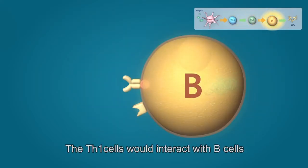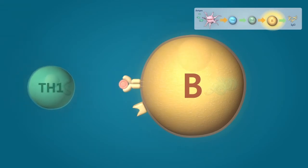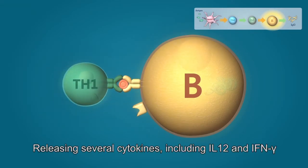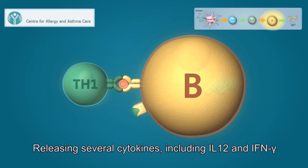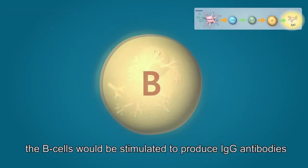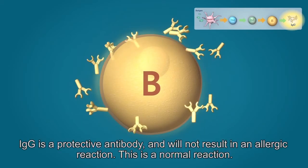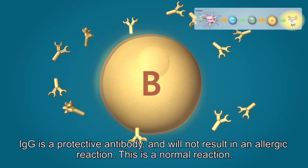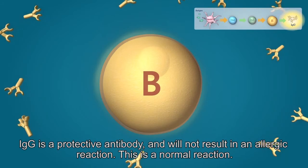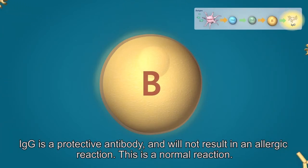The Th1 cells would interact with B cells, releasing several cytokines, including interleukin-12 and interferon gamma, and the B cells would be stimulated to produce IgG antibodies. IgG antibody is a protective antibody and will not result in an allergic reaction. This is a normal reaction.